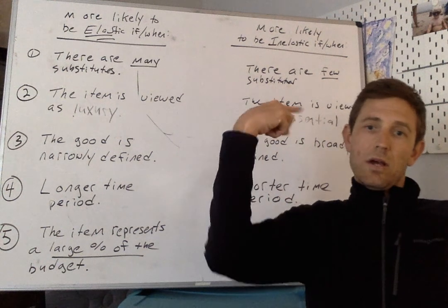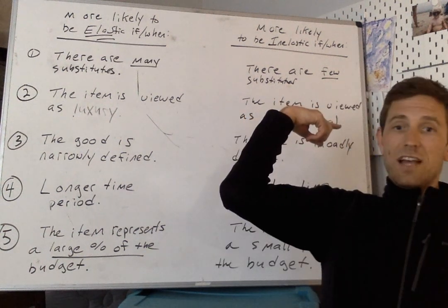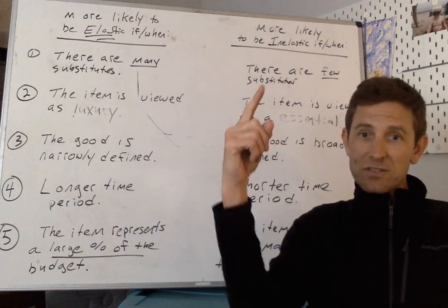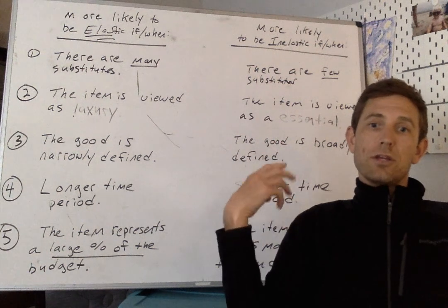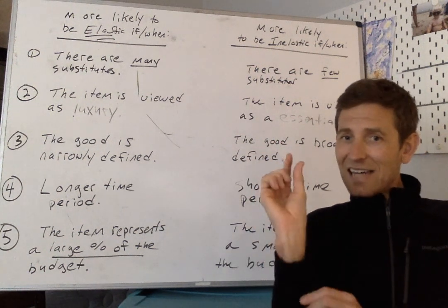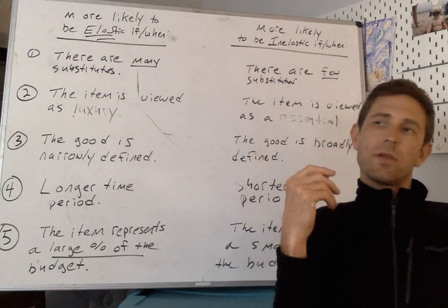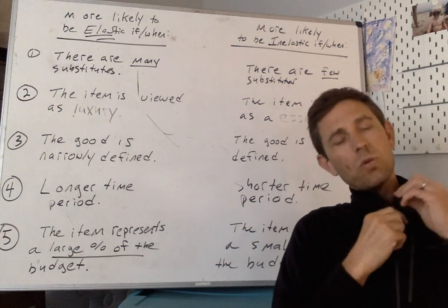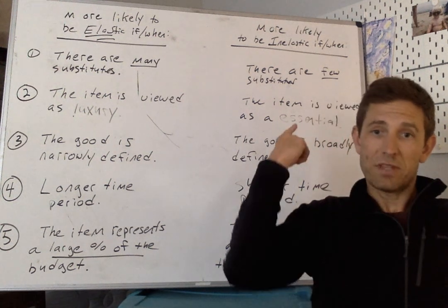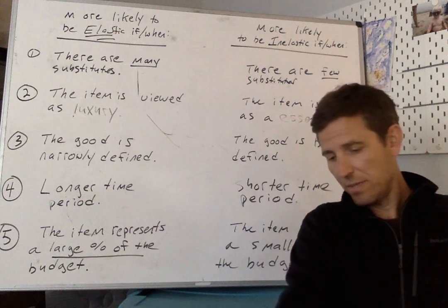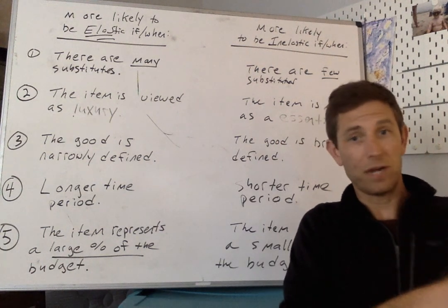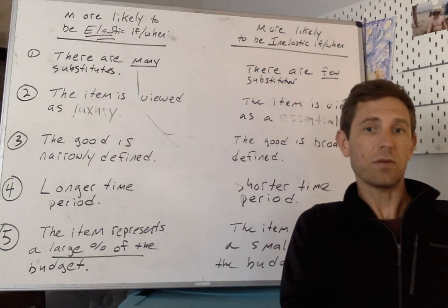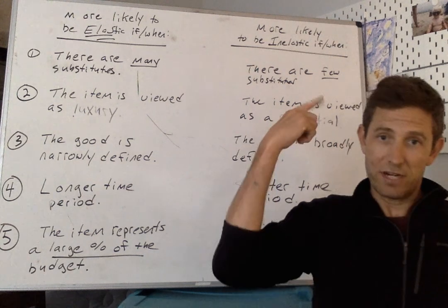On this side over here behind me on the left side of the board, inelastic demand. Those are things where if the price goes up, the price goes down, you buy the same amount of the good. Not necessarily the exact same amount, but a similar amount of that good. Maybe something like prescription medication would be a good example of something that we've got over here for inelastic demand wherein a price changes and you're going to continue to buy about the same amount of that medication that you did before. Price doesn't matter so much for inelastic demand.